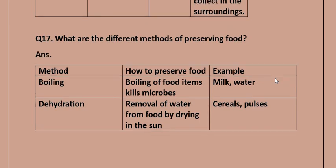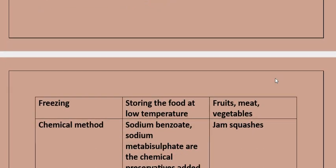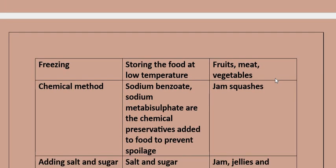Question 17: What are the different methods of preserving food? Boiling: boiling food items kills microbes, e.g., milk and water. Dehydration: removal of water from food by drying in the sun, e.g., cereals and pulses. Freezing: storing food at low temperature, e.g., fruits, meats, and vegetables.